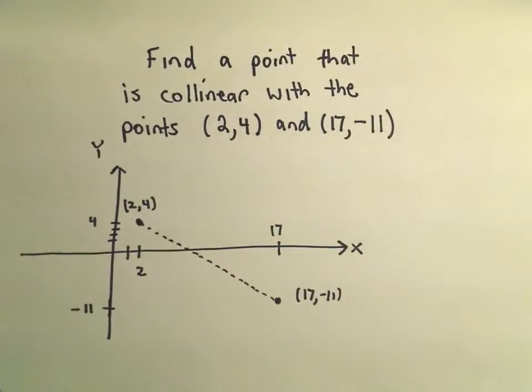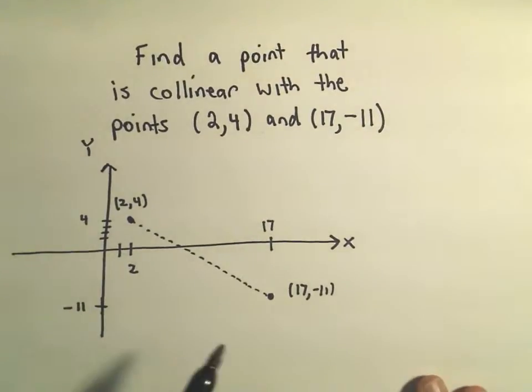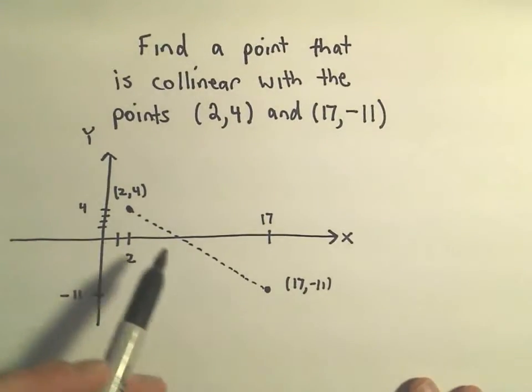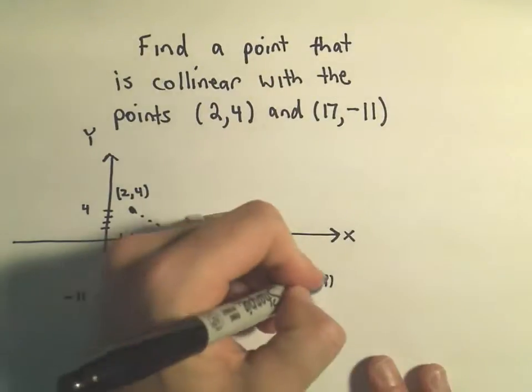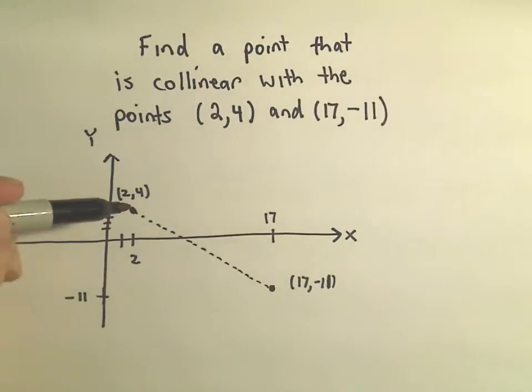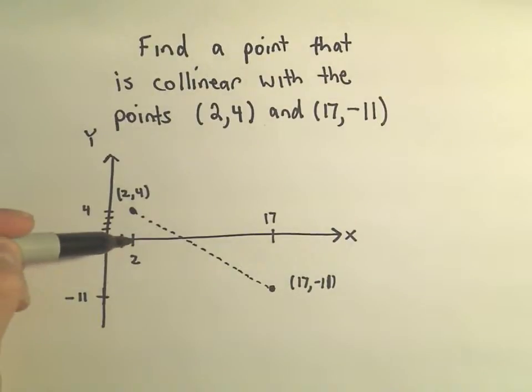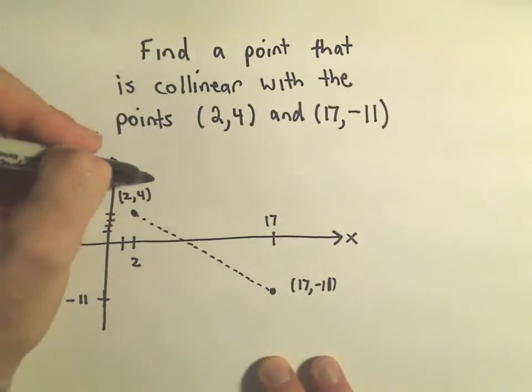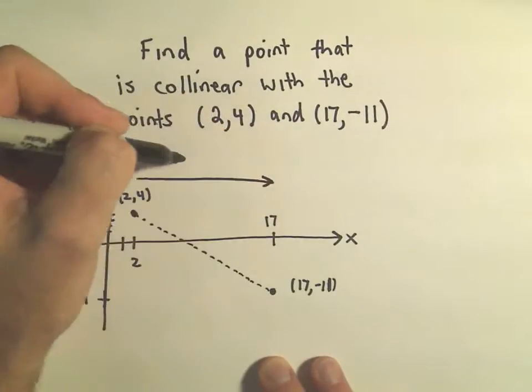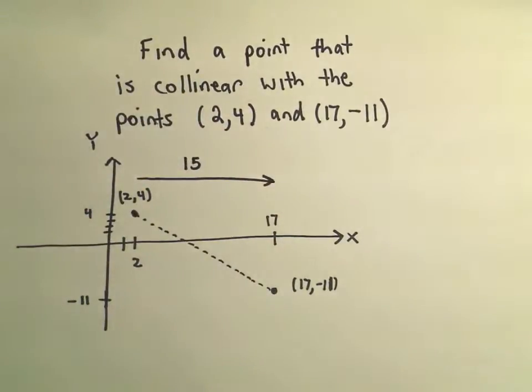What I'm going to do to find a point that's collinear is make an observation about the steepness of this line, or what we sometimes refer to as the slope. Let's think about what happened. Since we were at the x-coordinate of 2 and moved to the x-coordinate of 17, we moved horizontally 15 units to the right.